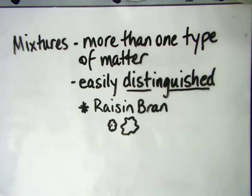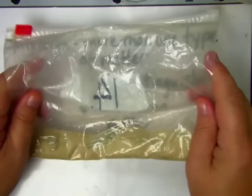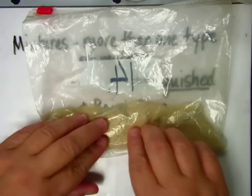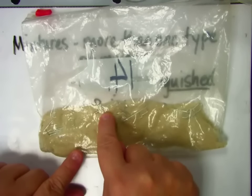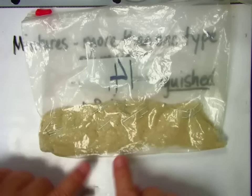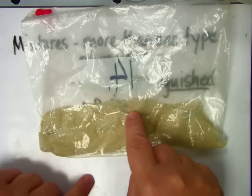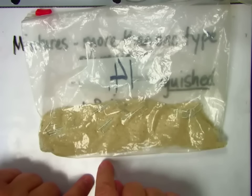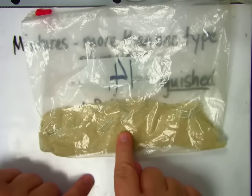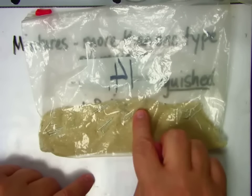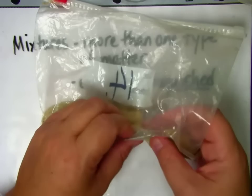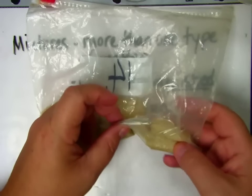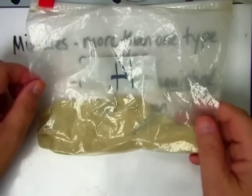Another type of mixture we can have is a solid mixed with a solid. Here I've got sand mixed with paper clips — so there are two types of solids. I have two types of matter and I can easily distinguish them. I can just pick out the paper clips, so it's easy to distinguish.